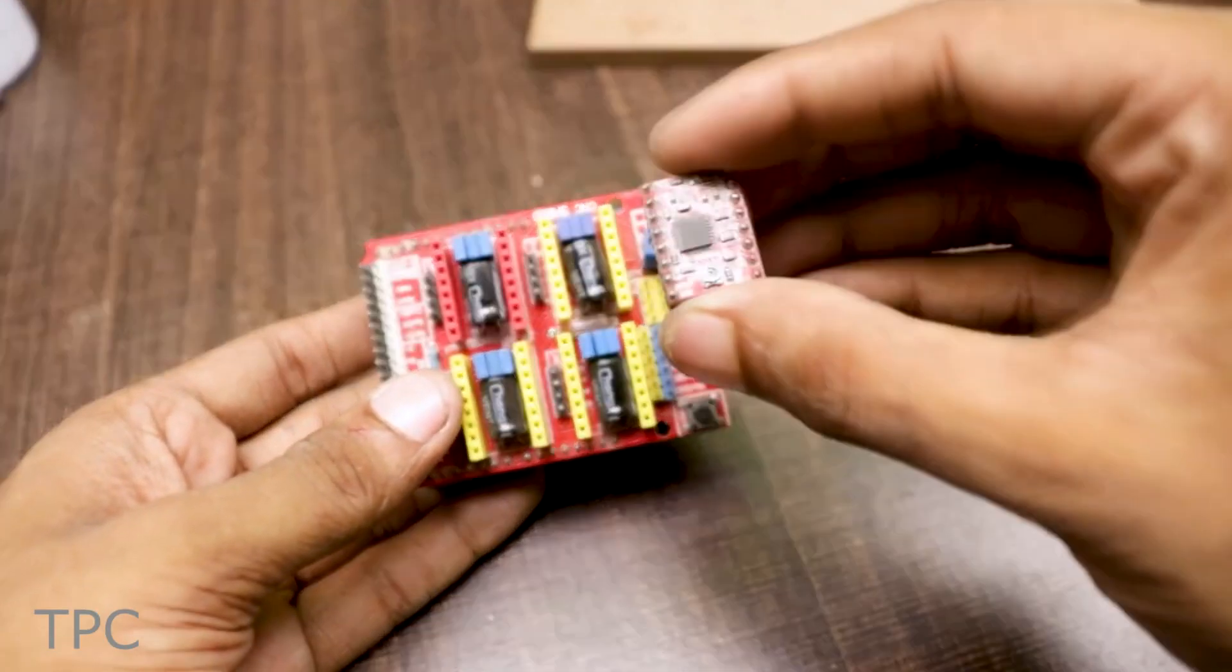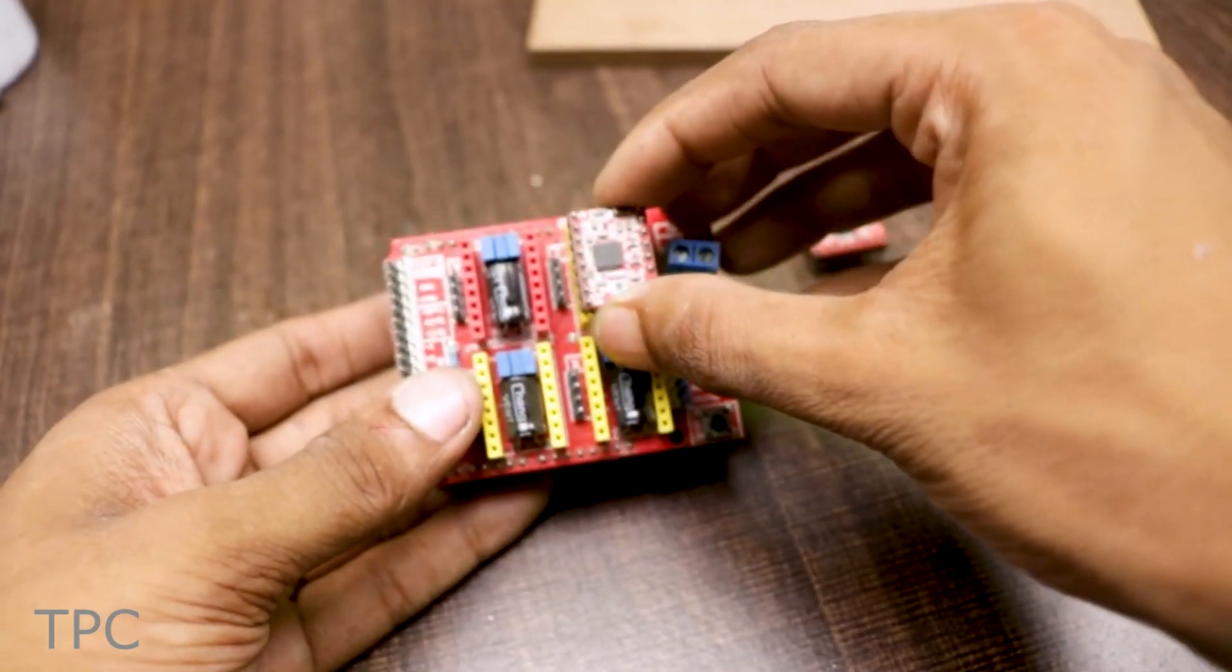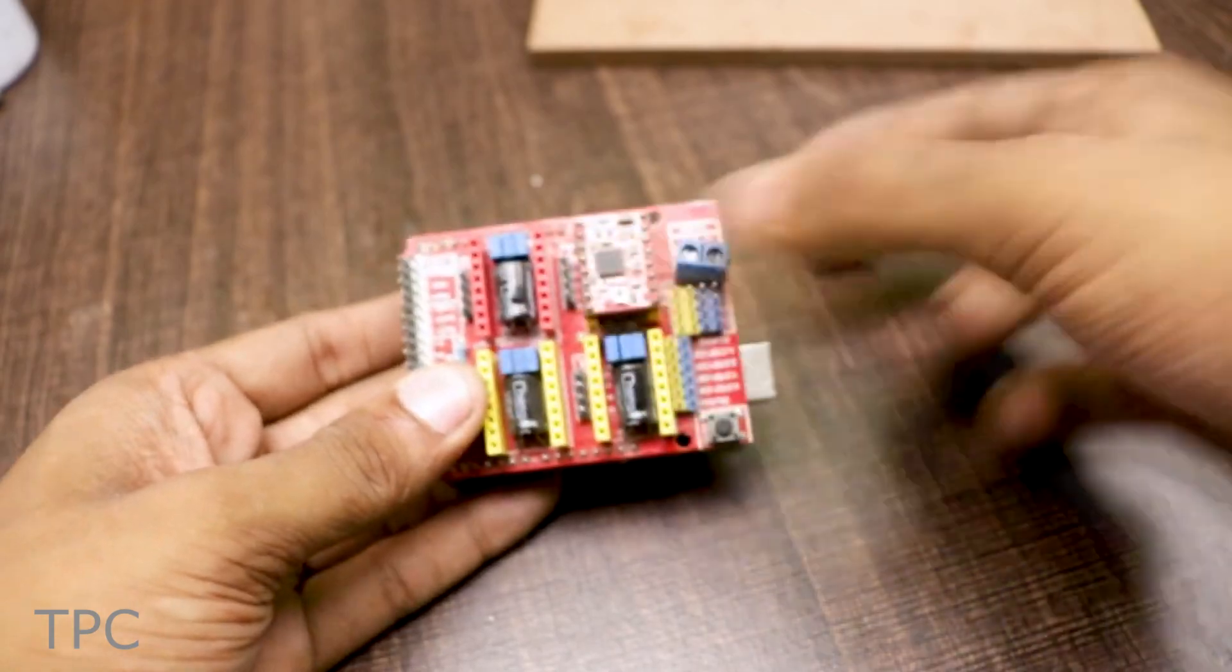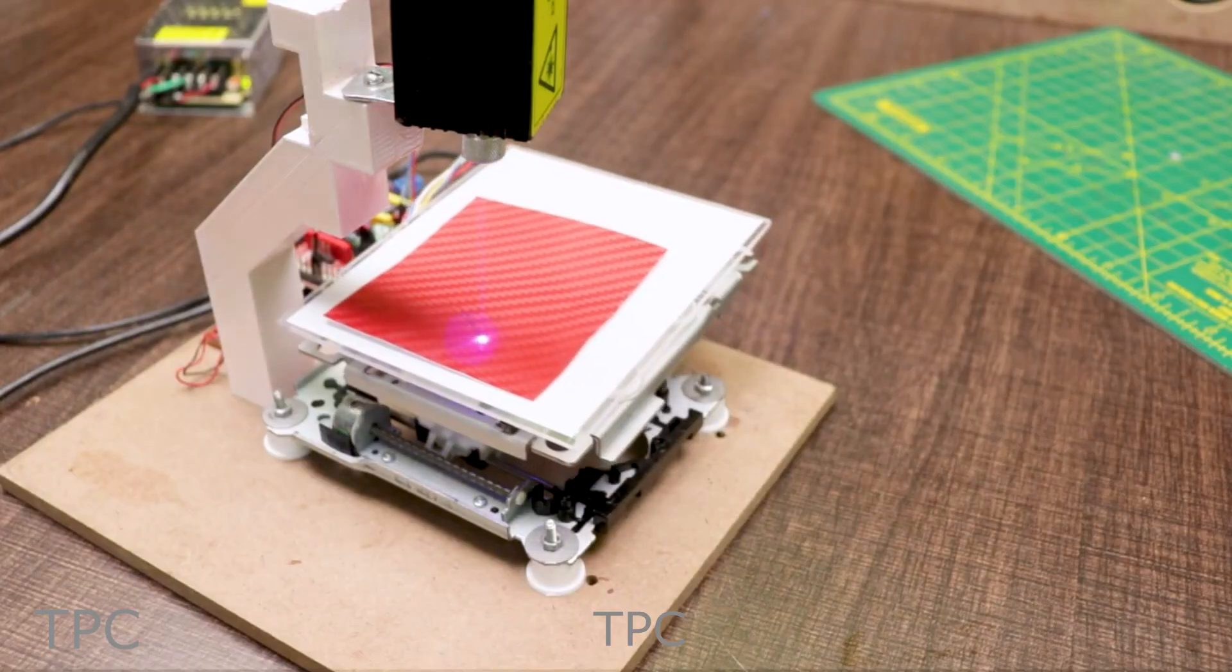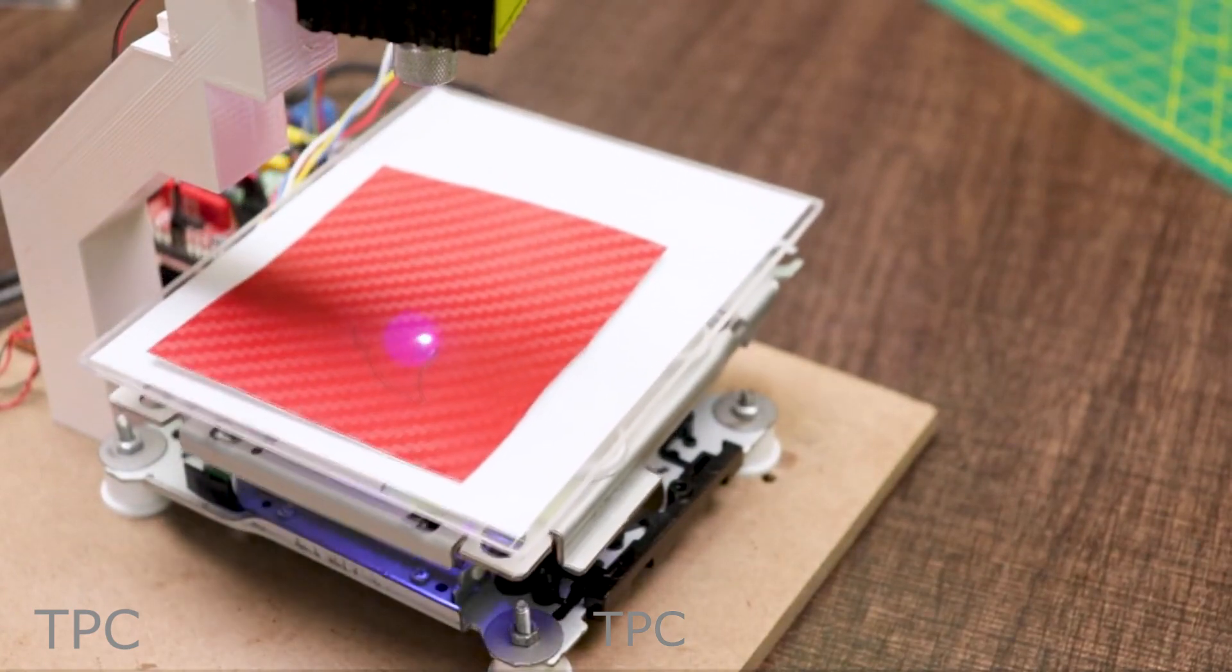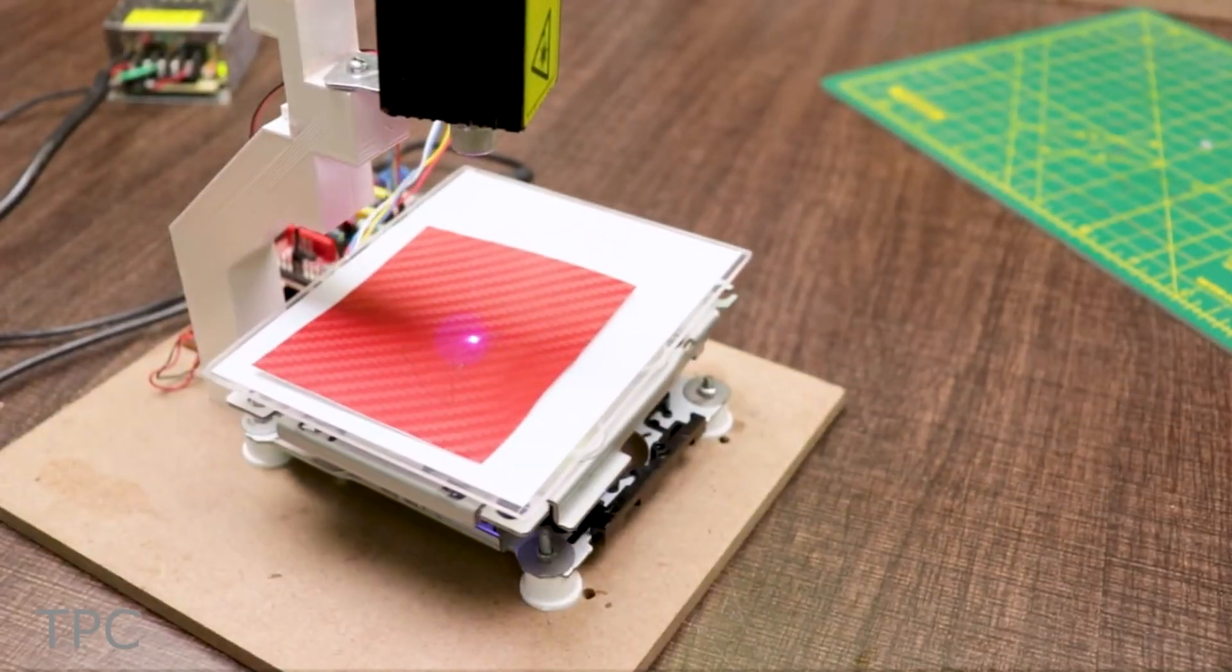The control part consists of an Arduino and a CNC shield with A4988 motor drivers. The stepper motor is controlled with just two pins from the controller, one for controlling the rotation direction and the other for controlling the steps.